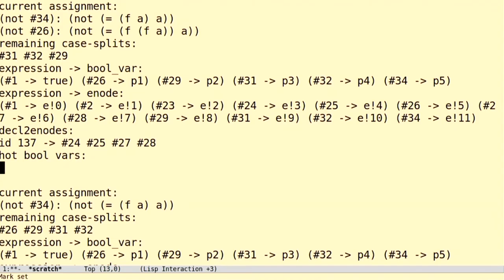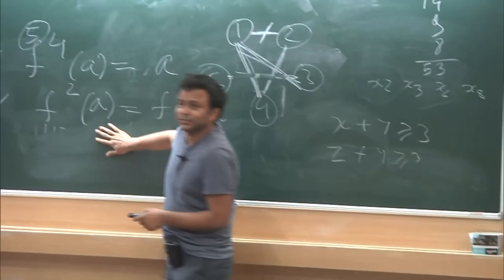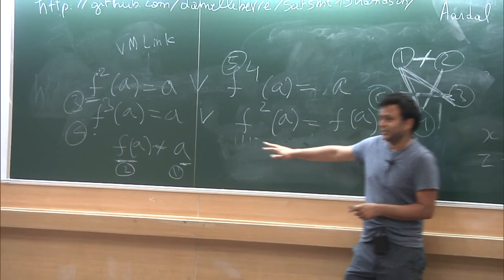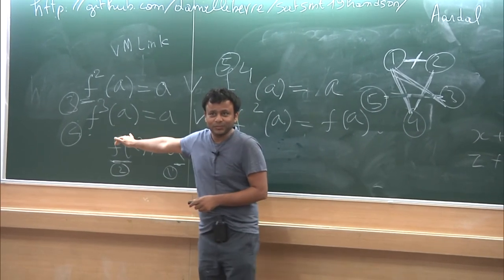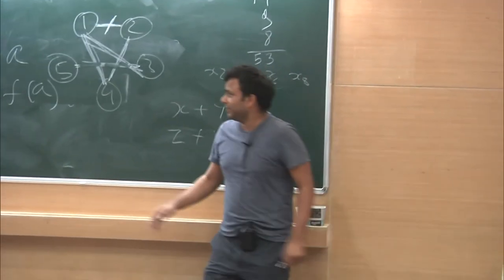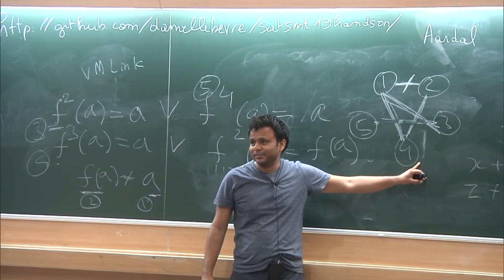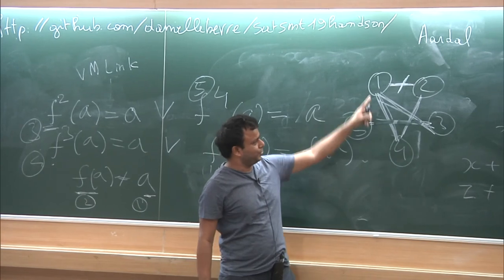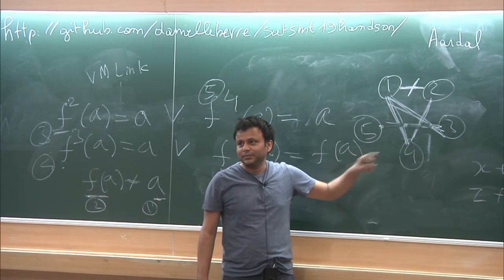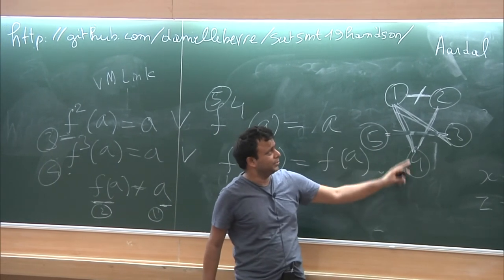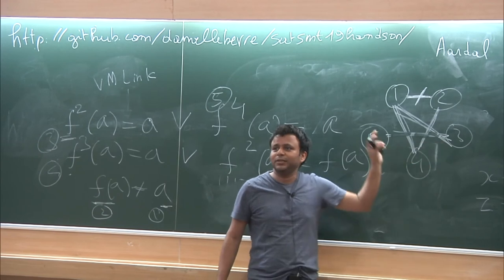Since F squared equals A is now false, the next propagation step must make the other disjunct in that clause true. Once that disjunct — F to the power 4 equals A — is set to true, the equality reasoning algorithm triggers and starts building equivalence classes. We now go through F6 to propagate and see the state after that.